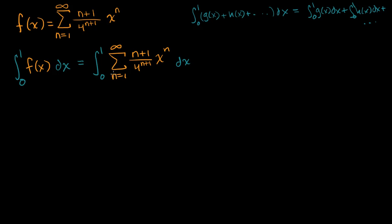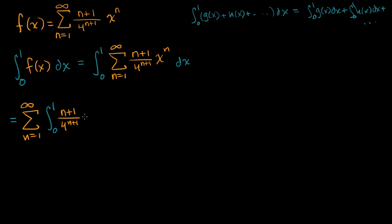So we can do the exact same thing here, using sigma notation. This is going to be equal to the sum from n equals one to infinity of the definite integral of each of these terms. So I'm going to write it as: the sum from n equals one to infinity of the integral from zero to one of (n+1) over 4 to the (n+1) power times x to the n, dx. Now we're taking the sum of each of these terms.